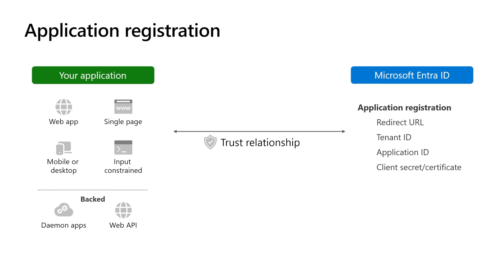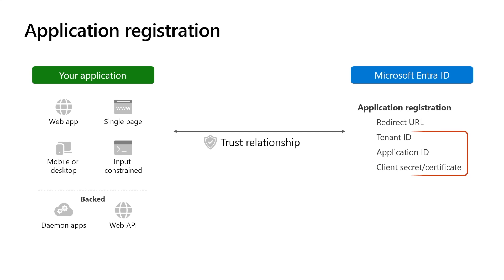All interaction between any application and Microsoft Entra External ID includes this ID. Applications that run on a server — like web applications, web APIs, or daemon applications — that are capable of storing sensitive configuration details are classified as confidential clients. Therefore, they must authenticate themselves to Microsoft Entra External ID with a client secret or certificate.